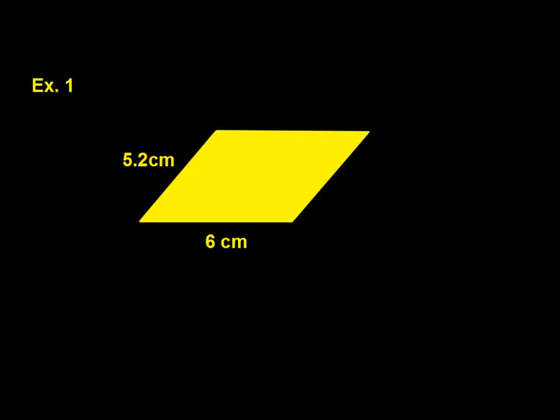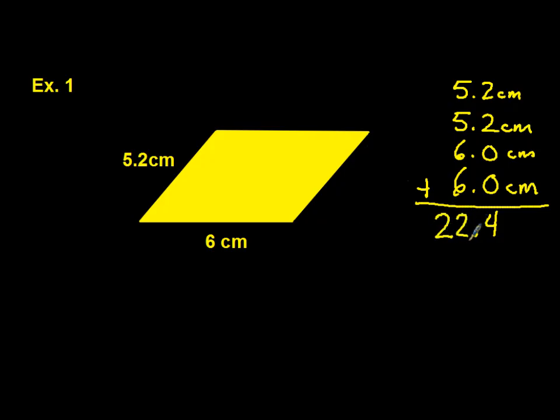The first thing we're going to do is figure out the perimeter. We know that opposite sides are equal. So we have 5.2 centimeters on the left-hand side and also 5.2 on this side, and 6 centimeters on the bottom and 6 centimeters on the top as well. We can go ahead and add those up and we get 22.4 centimeters. That's our perimeter.